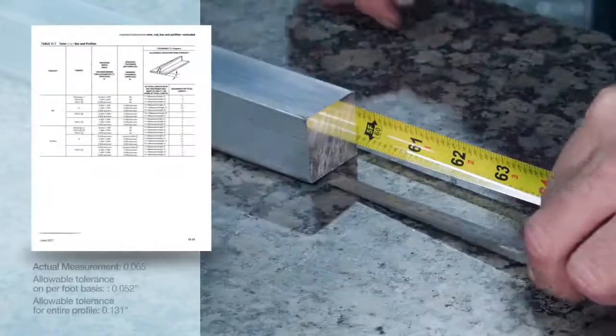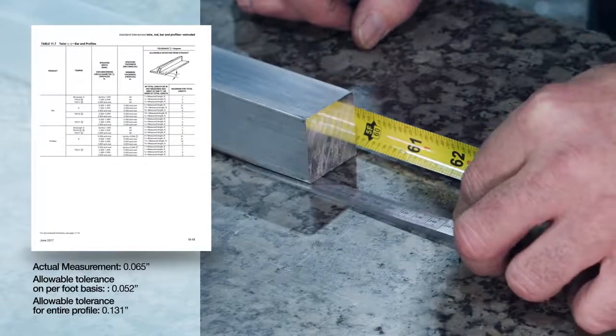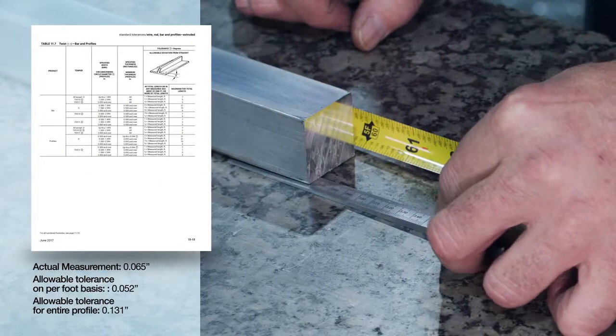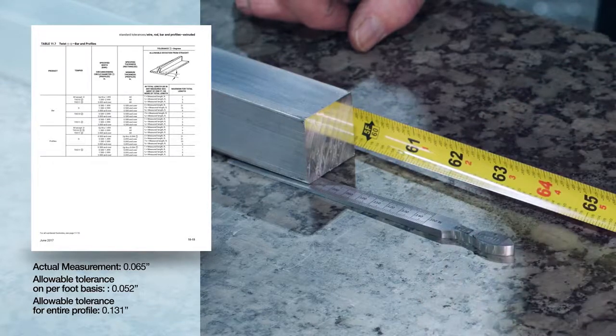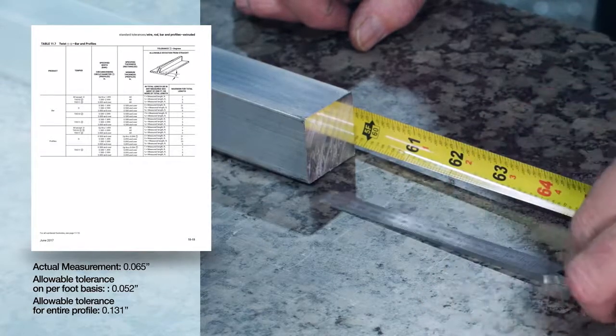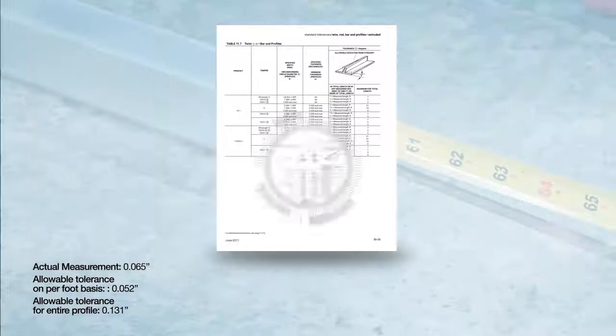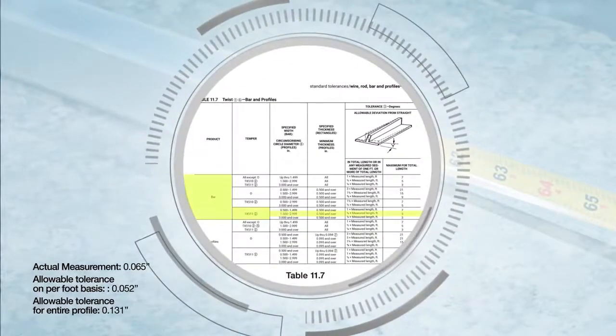As we saw earlier in the video, the gap measures 0.065, which exceeds the allowable tolerance of 0.052 on a per foot basis. This profile is therefore considered not within tolerance.